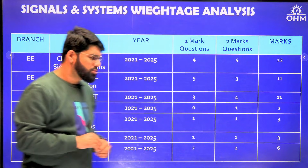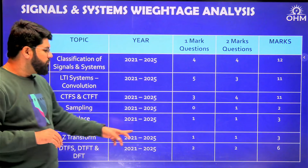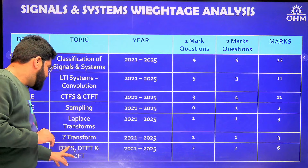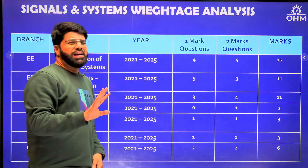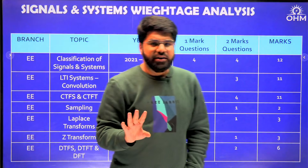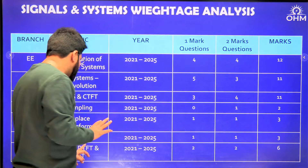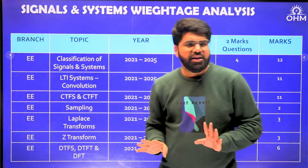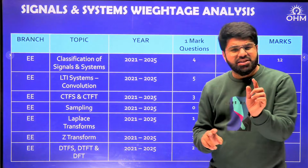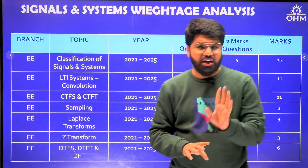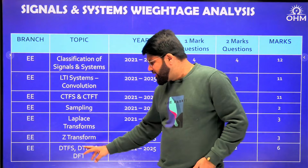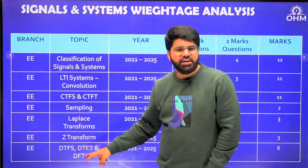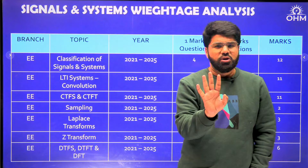Laplace transform for EE has two questions — one of one mark and one of two marks — totaling three marks. Z-transform has one question of one mark and one question of two marks, lower weightage at three marks. DTFS, DTFT, and DFT for EE — don't expect DFT questions in Electrical, so it's majorly DTFS and DTFT — four questions total, two of one mark and two of two marks, totaling six marks.